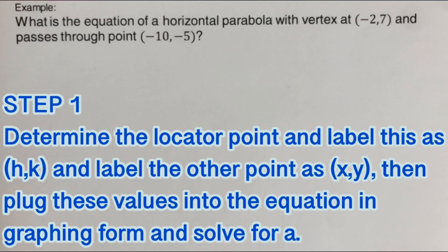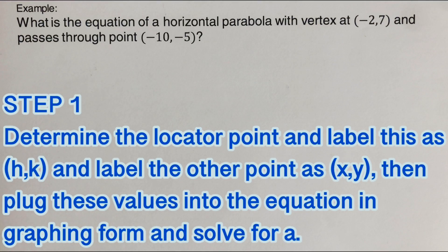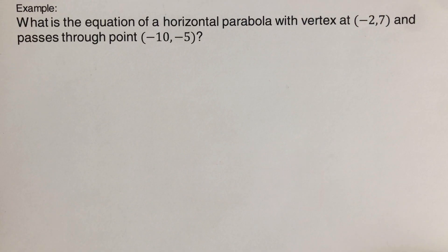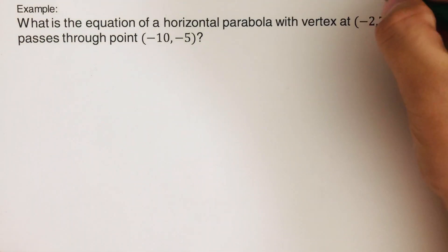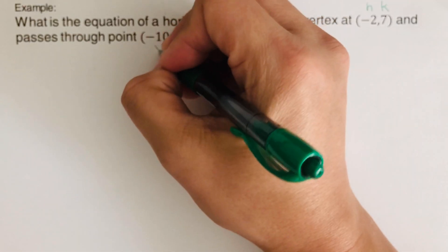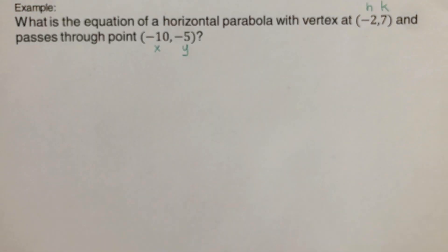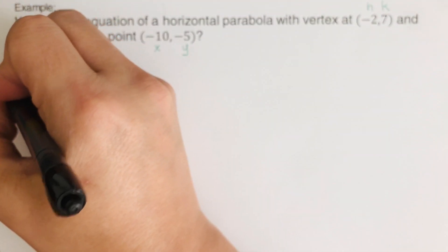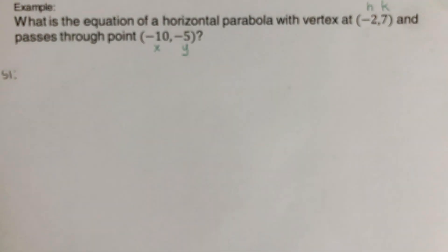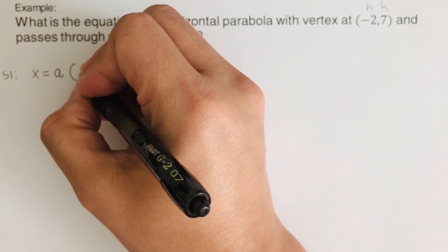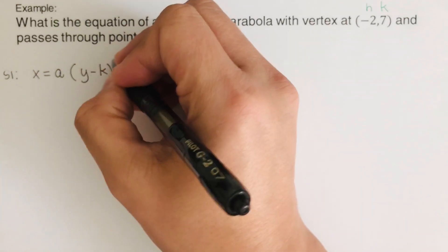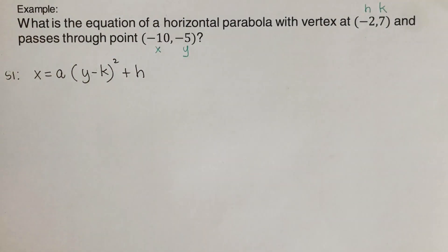The first step is to determine the locator point and label it as (h, k), and label the other point as (x, y), then plug these values into the equation in graphing form and solve for a. Since we say this is the vertex, that means this is our locator point — we label it as (h, k). The other point will be labeled as (x, y). We are going to plug these into the graphing form: x equals a(y minus k) squared plus h.